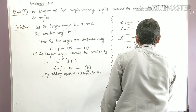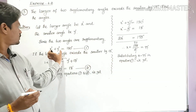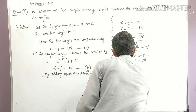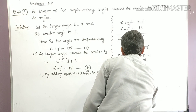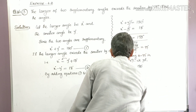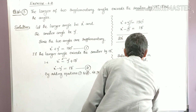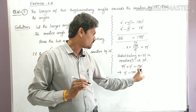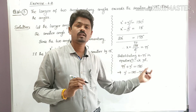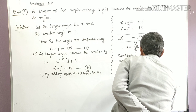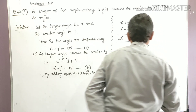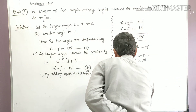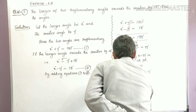Substituting x equals 99 in Equation 1: 99 plus y equals 180, so y equals 180 minus 99, therefore y equals 81 degrees.